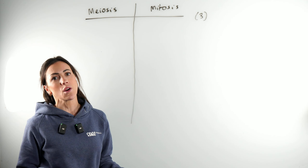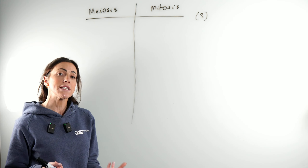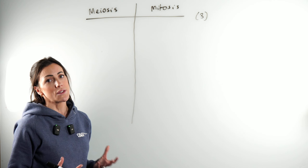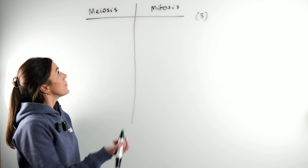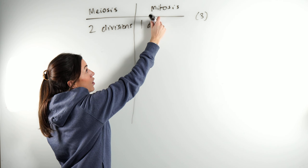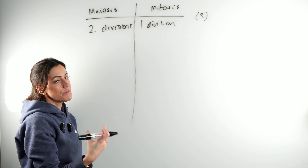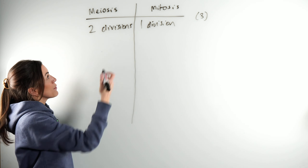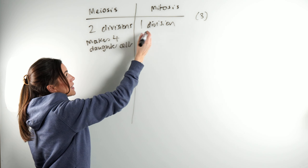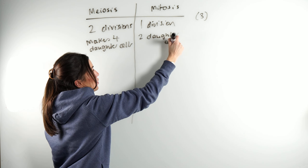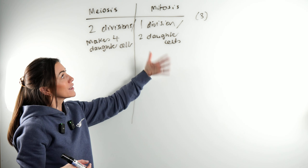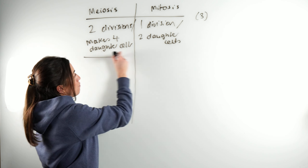You could get a three-mark question on your A-level biology exam asking you to give three differences between meiosis and mitosis. Starting with the most obvious: meiosis involves two divisions whereas mitosis only involves one division. Similarly, meiosis makes four daughter cells whereas mitosis makes two daughter cells — but that's likely the same marking point, since it's the two divisions that produce four daughter cells.